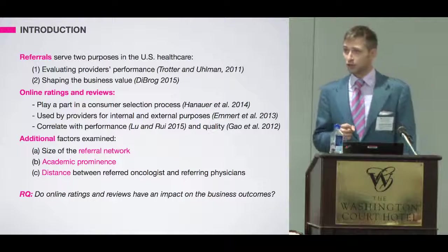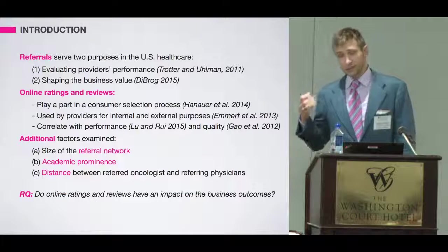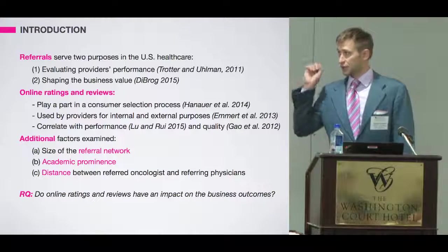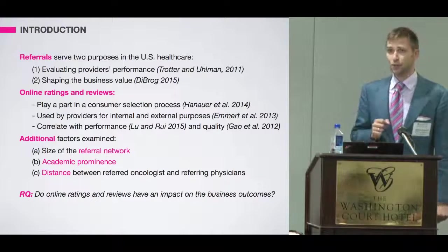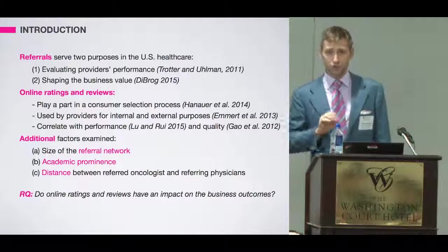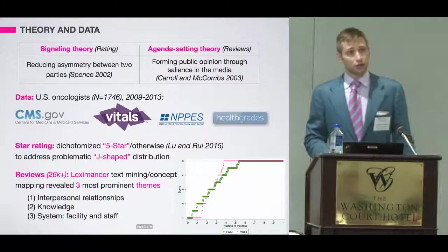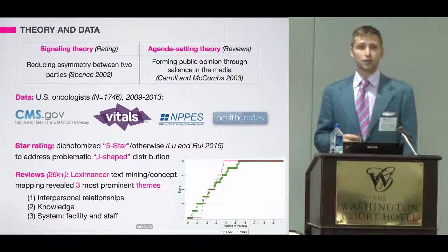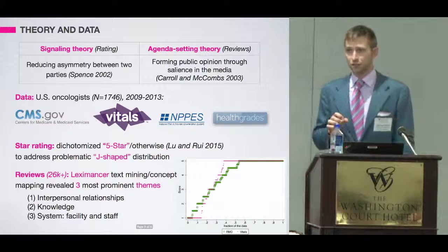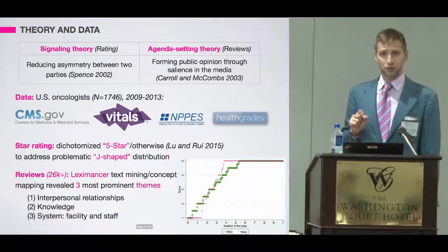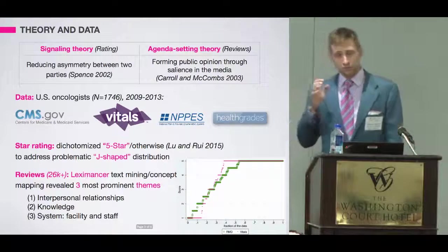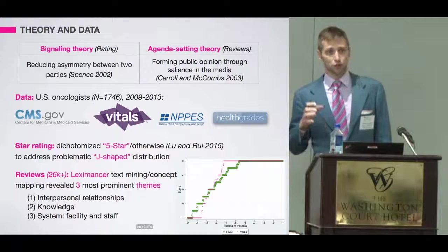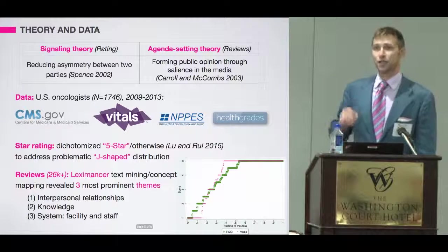We conducted a longitudinal study of 1,700 oncologists in the United States. We examined oncologists' referral networks, academic prominence, and distance between referred oncologists and referring physicians. We employed signaling theory to guide hypothesis development on the impact of online ratings, and extended our framework using agenda-setting theory — its core proposition of salience in the media influencing public opinion — to provide rationale for the impact of prior patient reviews on referrals.